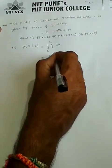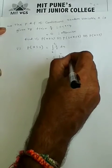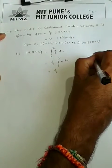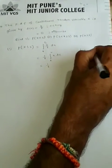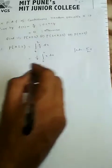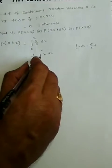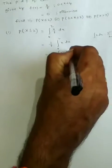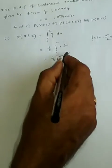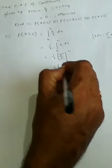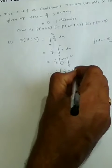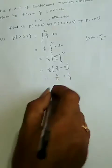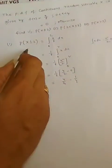Here 1/8 is constant, so we have 1/8 times the integral from 0 to 2 of x dx, which equals 1/8 times x²/2. Substituting the limits, upper limit minus lower limit: 2² = 4, so 4/2 minus 0. This gives 4/16, which equals 1/4. So P(X ≤ 2) = 1/4.